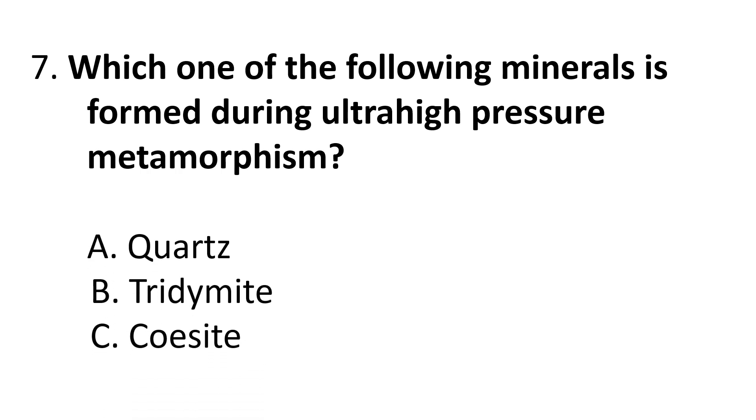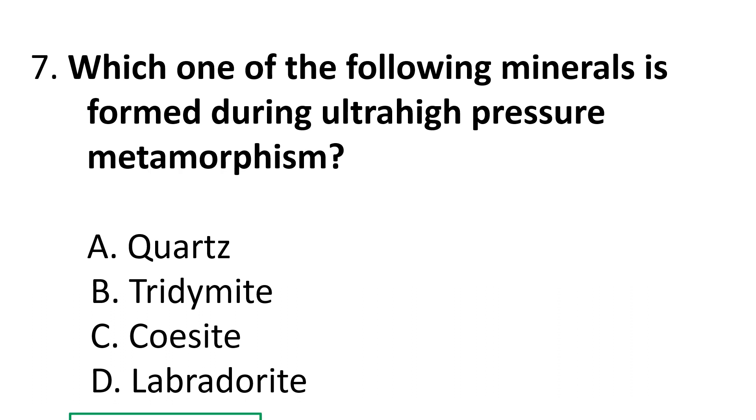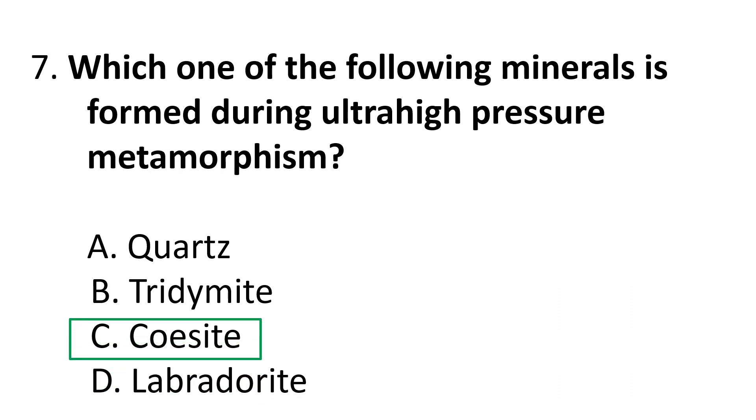Question 7: Which one of the following minerals is formed during ultra-high pressure metamorphism? Choices are: A) Quartz, B) Tridymite, C) Coesite, D) Labradorite. The correct answer is C) Coesite. Coesite is the highest pressure phase of quartz.